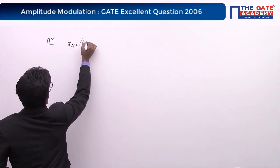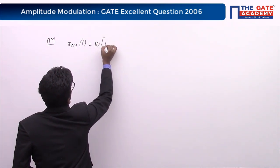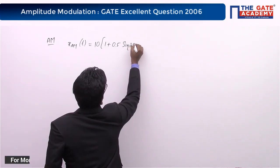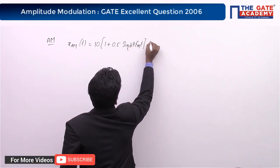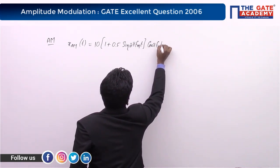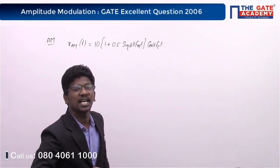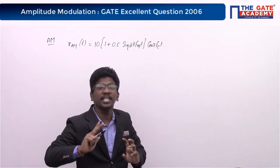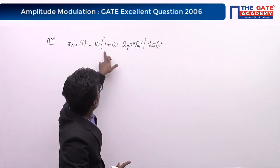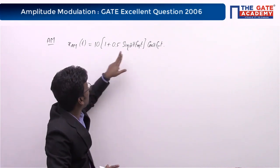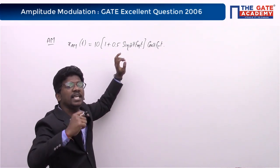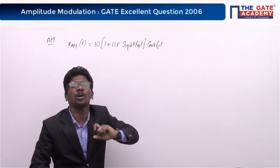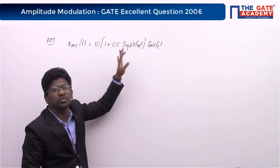The given AM signal is x_AM(t) = 10 × (1 + 0.5 sin(2π f_m t)) × cos(2π f_c t). In an AM signal we are transmitting two signals: one is the carrier signal — multiplying out the '1' gives cos(2π f_c t) — and the second is the modulated signal: 0.5 sin(2π f_m t) × cos(2π f_c t). So in AM we are transmitting these two signals.